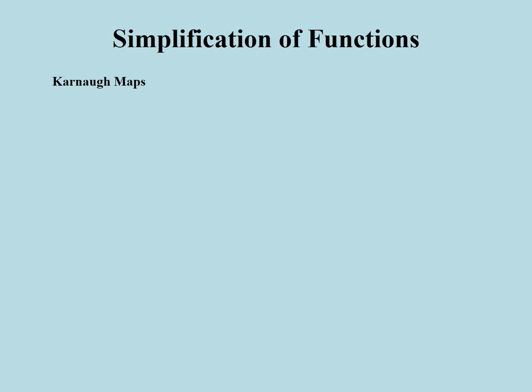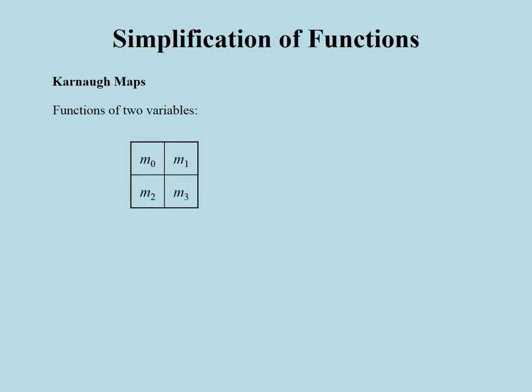A Carnot map is a tabular listing of the min terms of a logic function, like what we have in a truth table. But this time, the table is arranged in a different way. Let me start introducing the Carnot map in the simplest case, namely by considering functions of two variables. Literals of two variables can be combined in four different min terms, which we can tabulate in a two-by-two map.